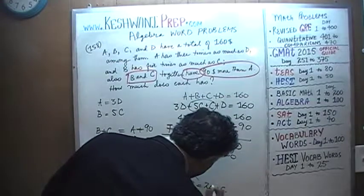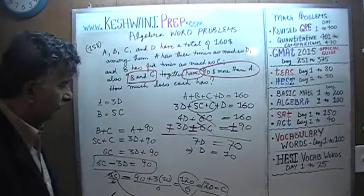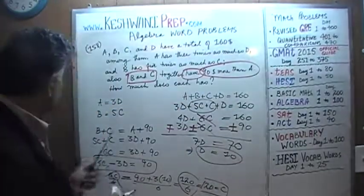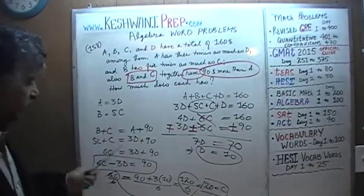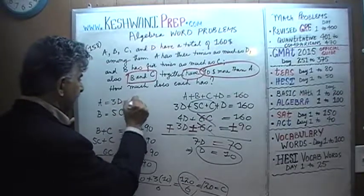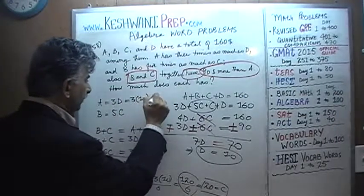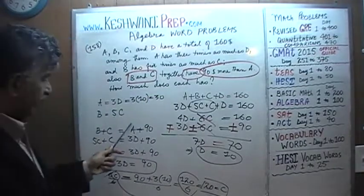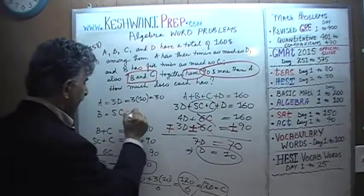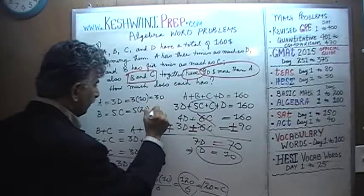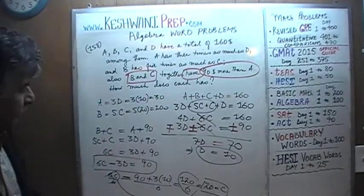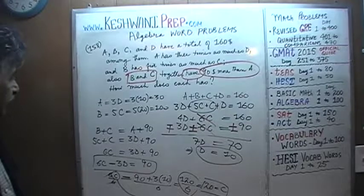We're making progress. D = 10 and C = 20. Now we can work on A and B. A = 3 × D = 3 × 10 = 30. And B = 5 × C = 5 × 20 = 100.